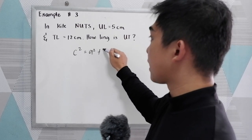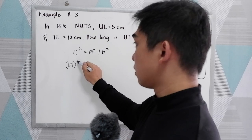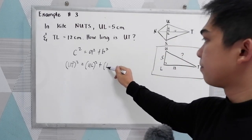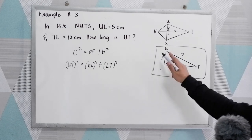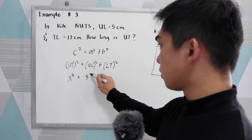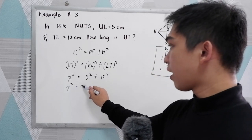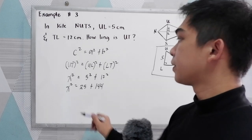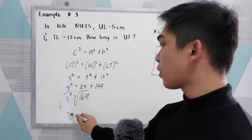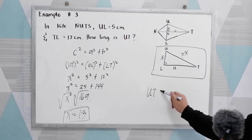Let UT equal x. Then x squared equals UL squared plus LT squared, which is 5 squared plus 12 squared, so x squared equals 25 plus 144, which equals 169. Taking the square root, x equals 13. Therefore, UT equals 13 cm.